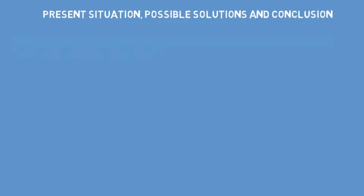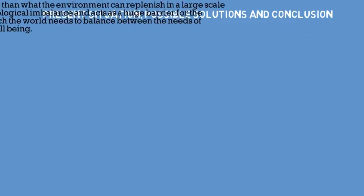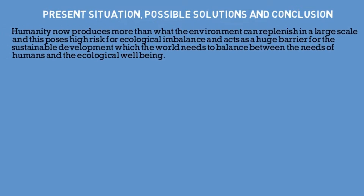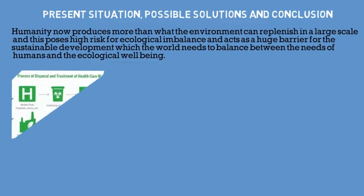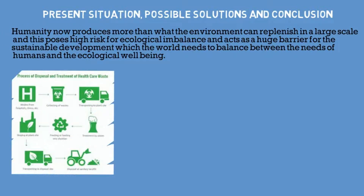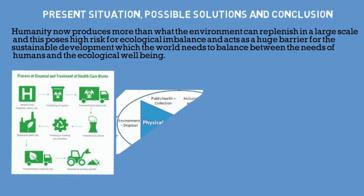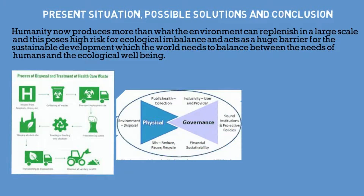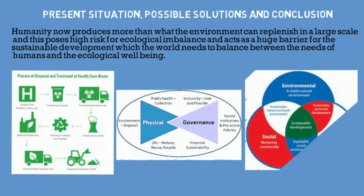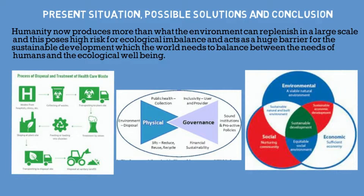Present situation, possible solutions and conclusion. Humanity now produces more than what the environment can replenish on a large scale, and this poses high risk for ecological imbalance and acts as a huge barrier for the sustainable development which the world needs to balance between the needs of humans and ecological well-being.